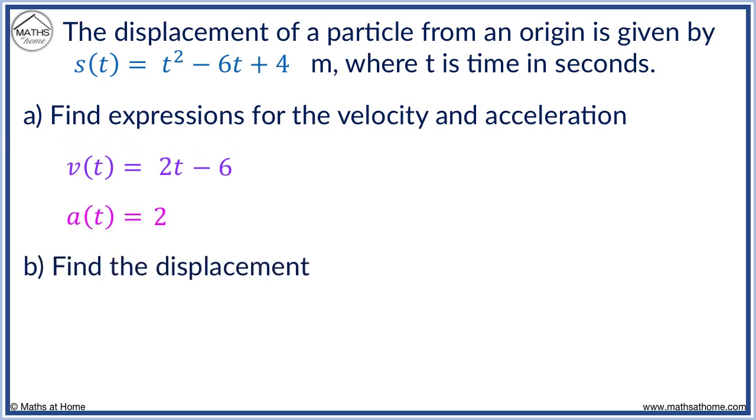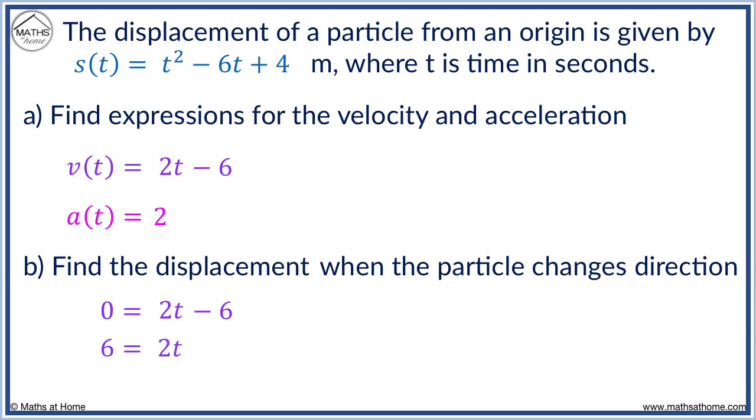Now we find the displacement when the particle changes direction. The particle changes direction when V equals 0. We take the velocity equation and set it equal to 0. We solve for T to find the times at which it changes direction. We add 6 to both sides to get 6 equals 2T. We divide by 2 to get T equals 3.